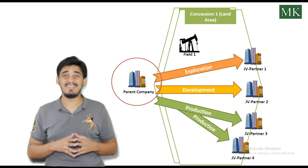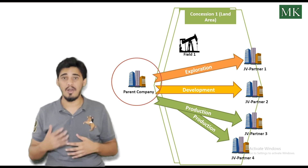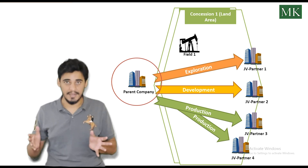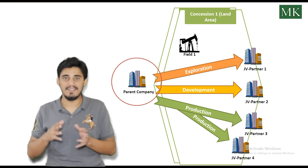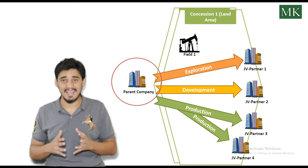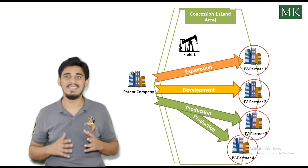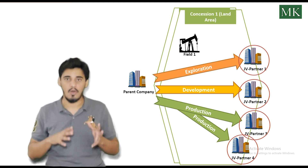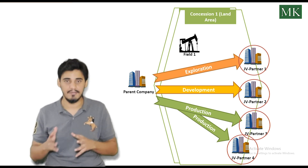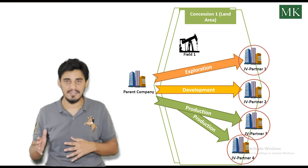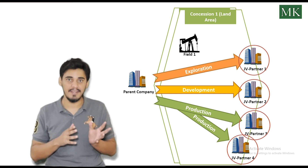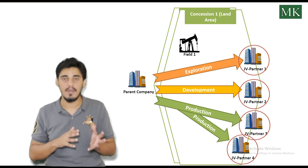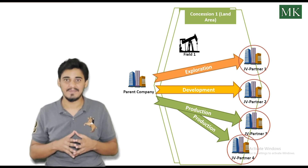The parent company that initiates the partnership and is responsible for managing all operations for the venture is called the operator. Whenever this company opens the joint venture in their SAP system, they will open it as an operated joint venture to record all expenses related to the venture. The JV partners who only receive a share of expenses and revenue according to their equity share are known as non-operated, and they open it as a non-operated joint venture in their system.